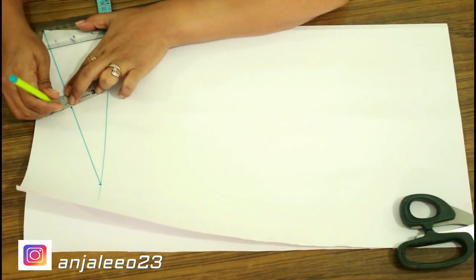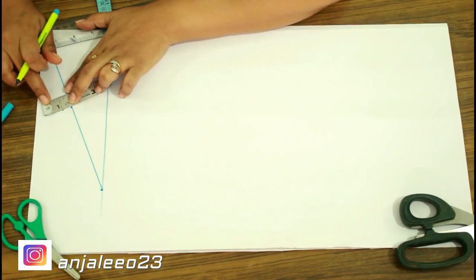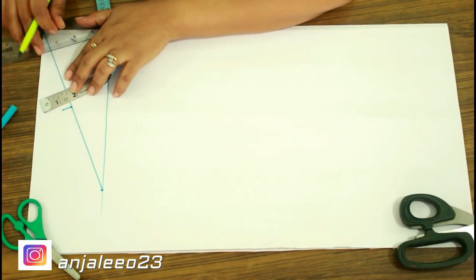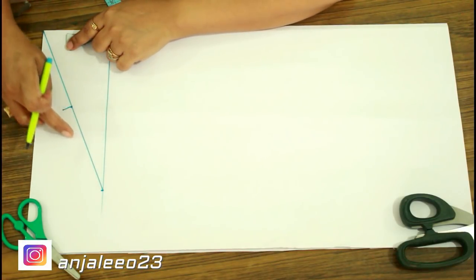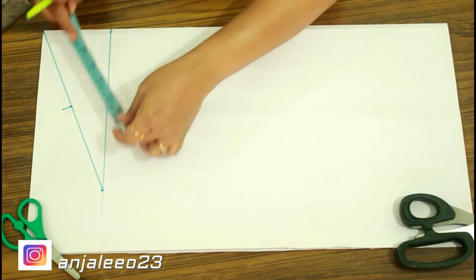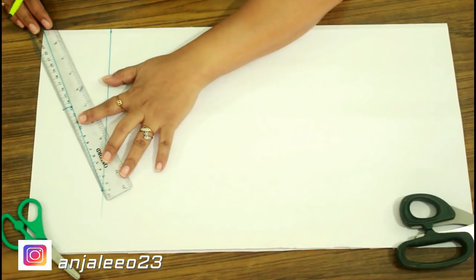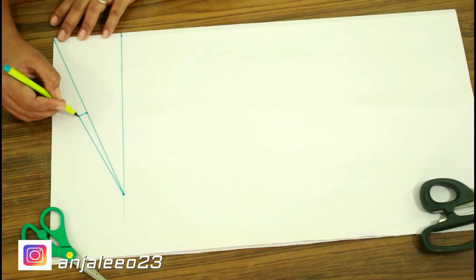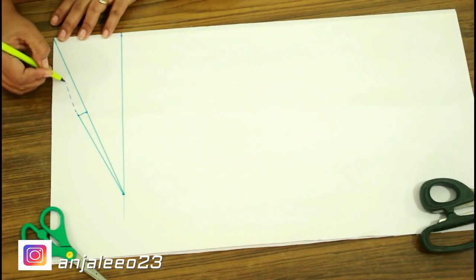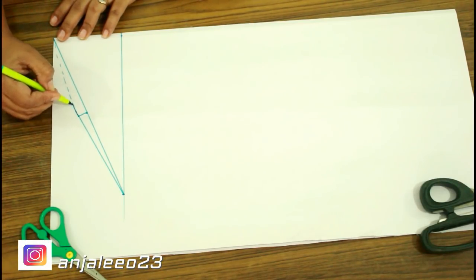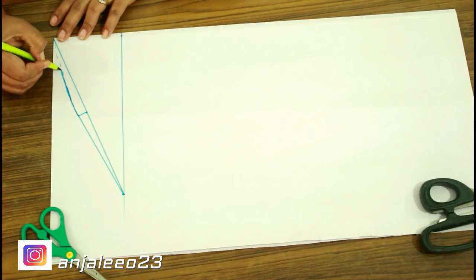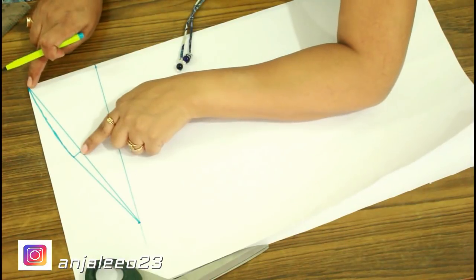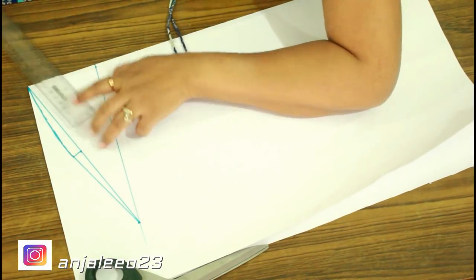Here I will draw a half an inch of line like this. Now I will connect these points. First I will connect these two points with a straight line, and now from here I'll take a gentle curve and I'll draw a curve here.